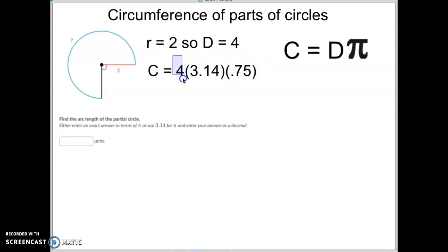So all I did is I took the diameter of 4, I multiply that by pi, and then I'm going to multiply that result by 0.75 because I only have 0.75 of a full circle. When I do all those easy math calculations out, I get 9.42.